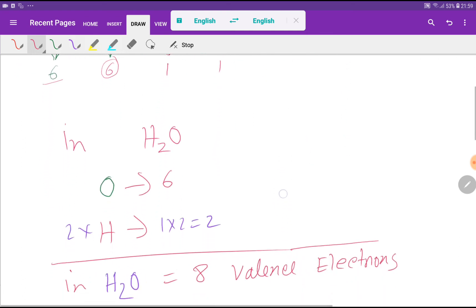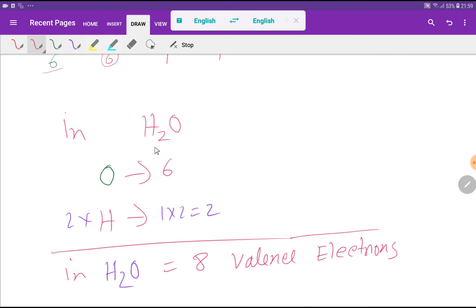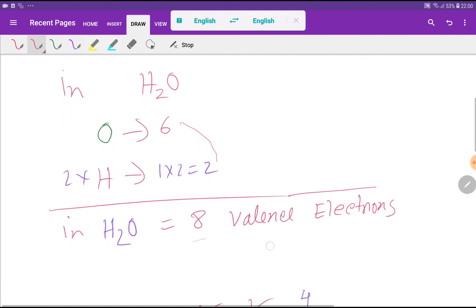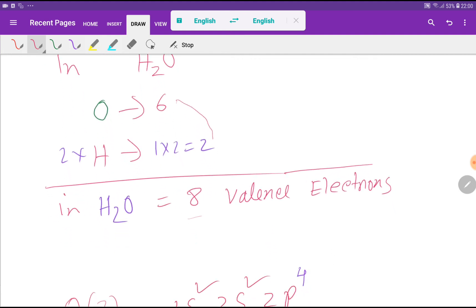Now we have to count the total number of valence electrons in the water molecule. One hydrogen atom has one valence electron, so two hydrogen atoms will have two valence electrons. Oxygen will have six valence electrons. If you add six plus two, you get eight valence electrons in water.